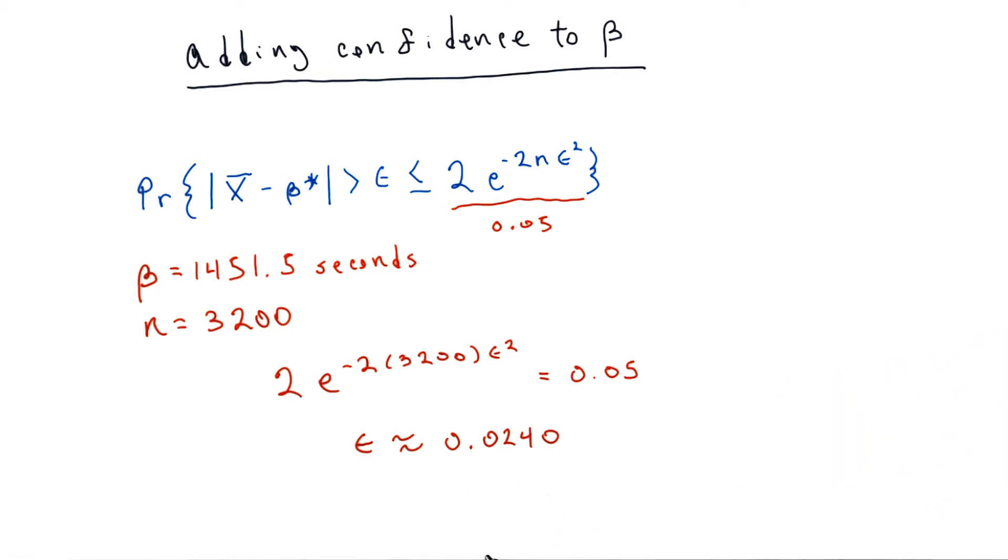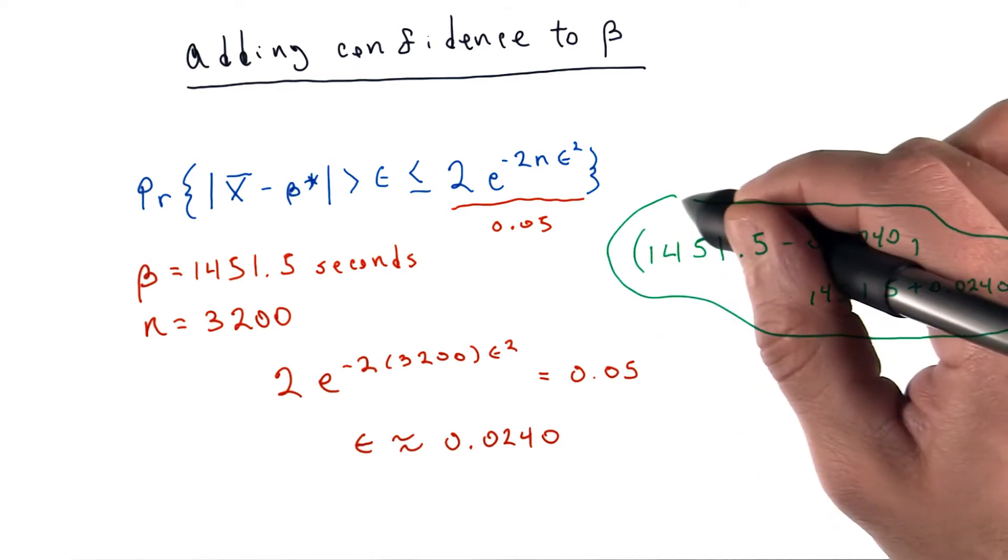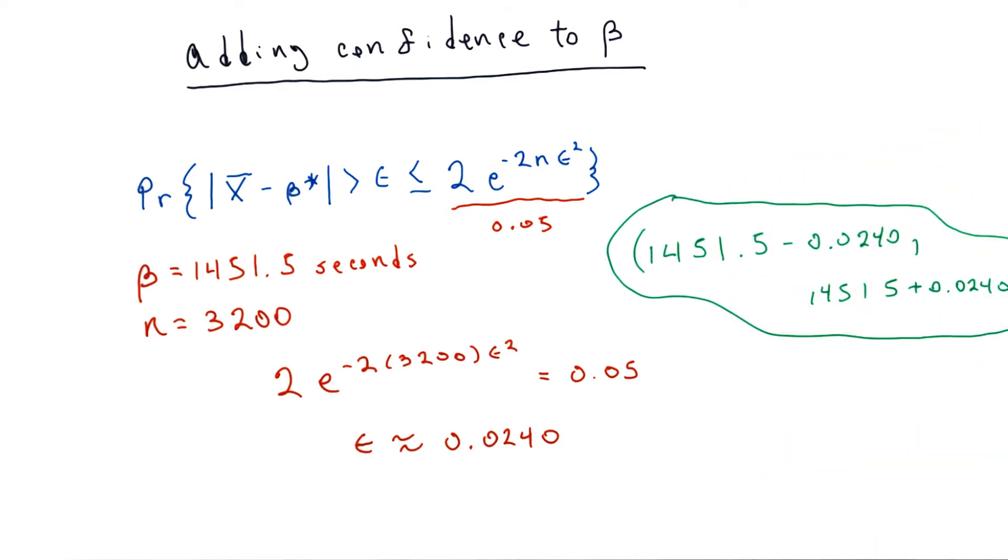What does this mean exactly? This interval traps the true value of beta with a probability of 95%.